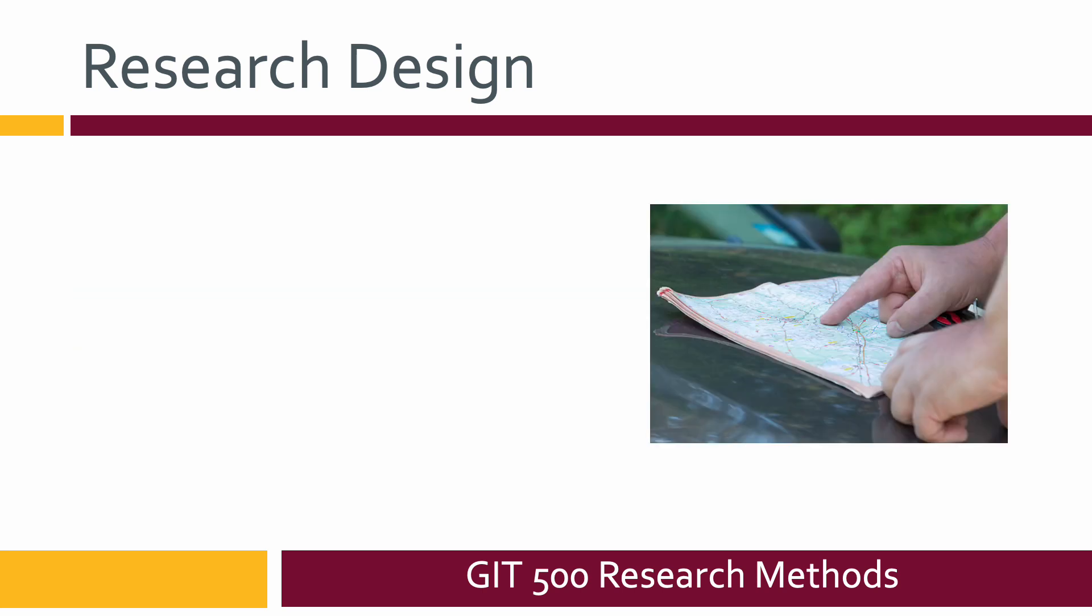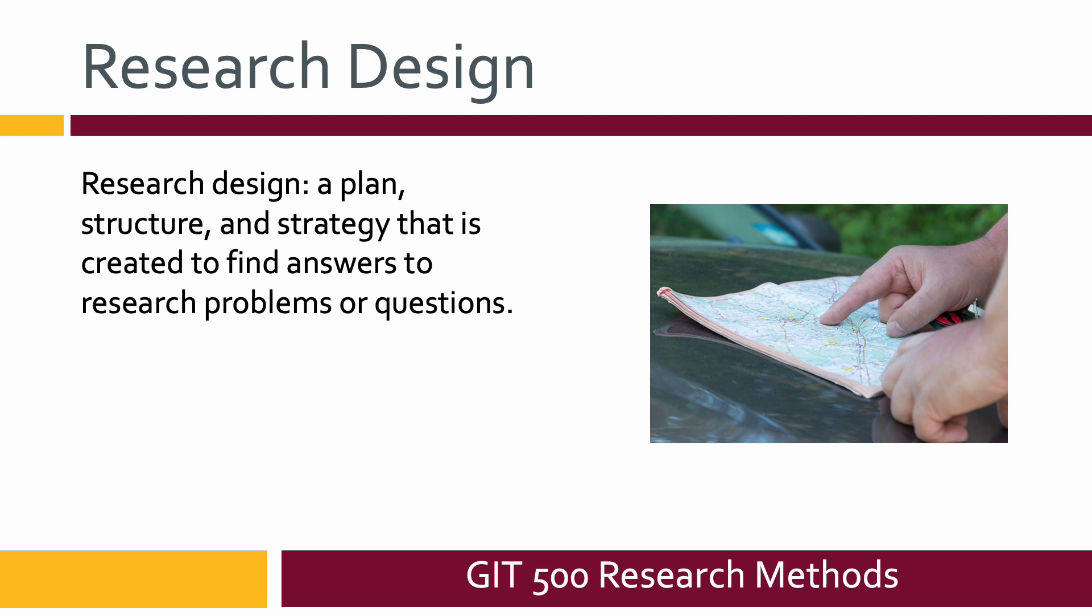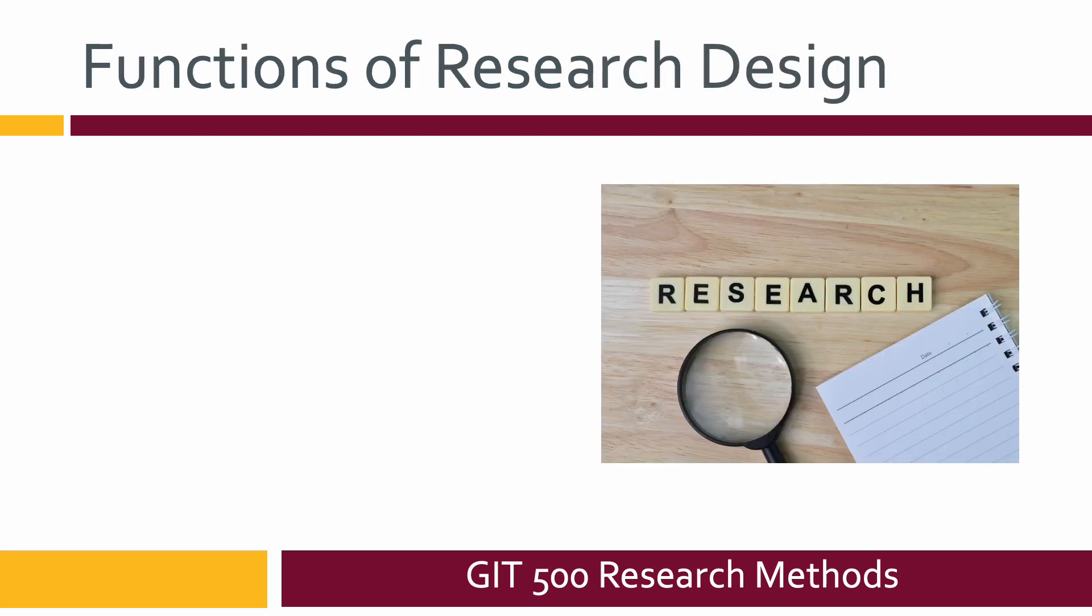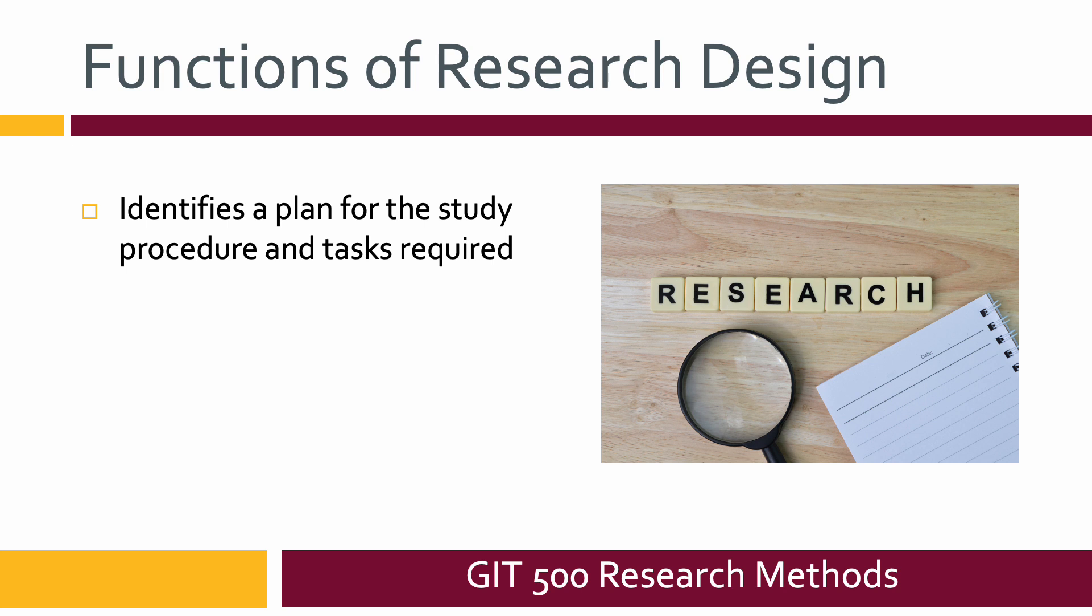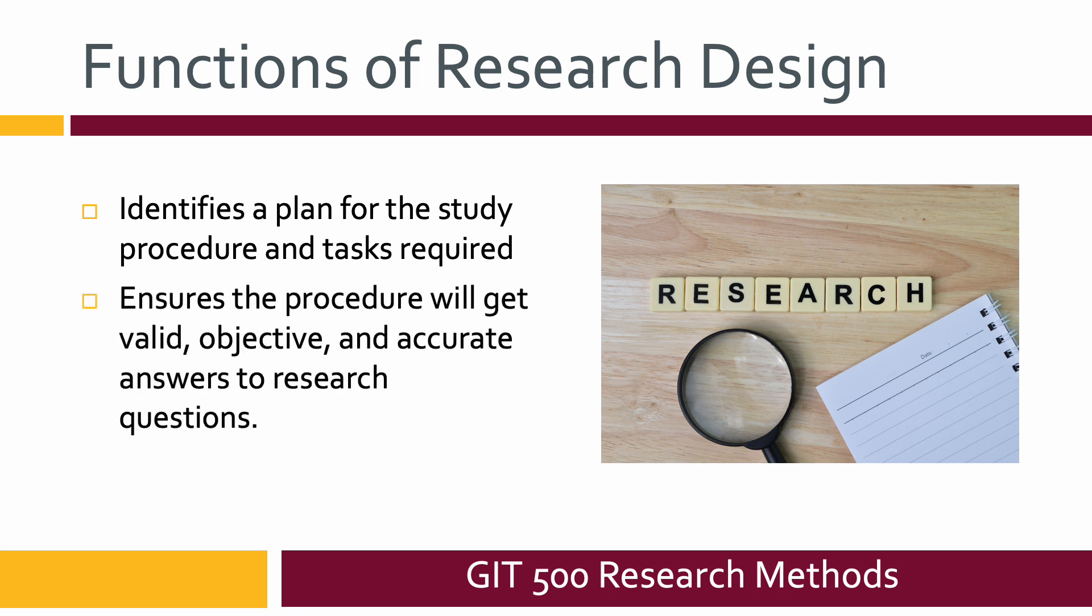Research design is a plan, a structure, and a strategy that is created to find answers to research problems or questions. It is a blueprint, a map to help researchers get those answers. The functions of research design are that they identify that plan for the study procedure, how it's going to happen, and the things that are needed or going to need to be done. It also ensures that those procedures are good enough to get valid, objective, and accurate answers to those research questions.